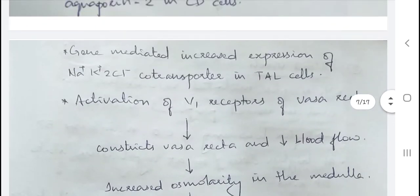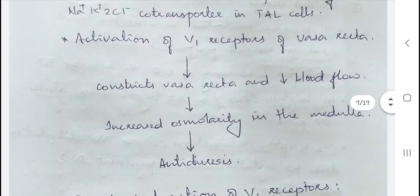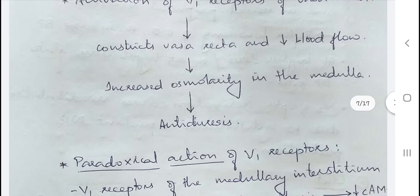The V1 receptors present in the vasa recta of the kidney will cause constriction and decreased blood flow when AVP activates them. As a result of decreased blood flow, there will be increased osmolarity of the medulla, which results in antidiuresis.